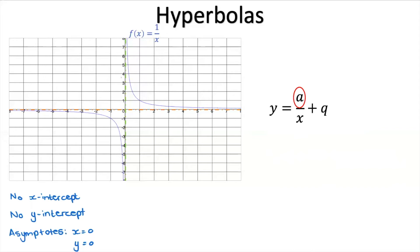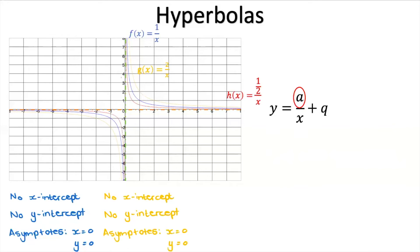Let's plot a graph where we change the a value. Plotting 2/x, we can see that it shifted the graph a bit further away from the axes. The characteristics are still the same: no x-intercept, no y-intercept, and the asymptotes are still x = 0 and y = 0. What if we try a = 1/2? We can see that it gets closer to the axes, but still doesn't cross them.